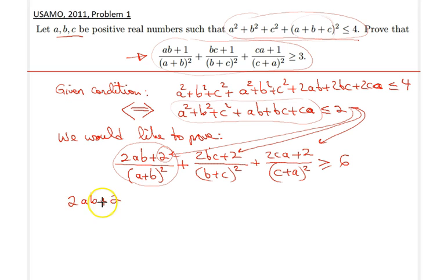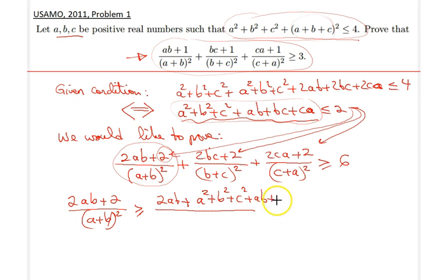So 2ab plus divided by a plus b squared. That thing is definitely greater than or equal to 2ab plus, obviously I'm replacing it with this expression here, so therefore a squared plus b squared plus c squared plus ab plus bc plus ca, all divided by a plus b squared.